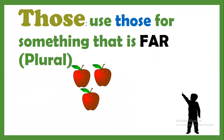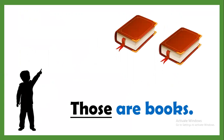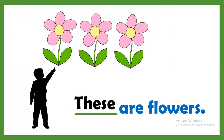So let's start the activities. These are books because it's near to the boy. These are books. Now books are very far from the boy, so we have to use those are books. These are flowers, so these will come because it's close to the boy.